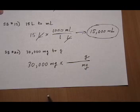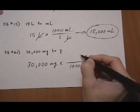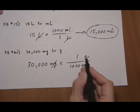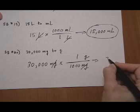Milligram is smaller than a gram by a thousand times. We need a thousand milligrams for one gram, and that's going to make the milligram cancel, leaving us with a gram. And if we divide 30,000 by a thousand, we get 30 grams.